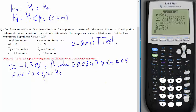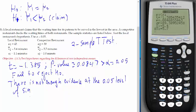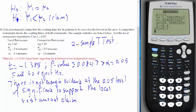And what's your conclusion in the context of the claim? There is not enough evidence at the 0.05 level of significance to support the local restaurant claim. That concludes the problem.